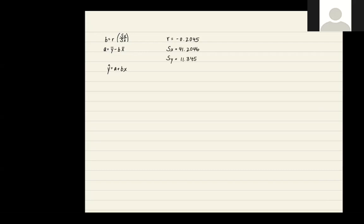These will get plugged into our equation. So b equals negative 2.045 times our sy divided by our sx value. So you can just plug these into your calculator, and they will give you a b value of negative 0.0563.